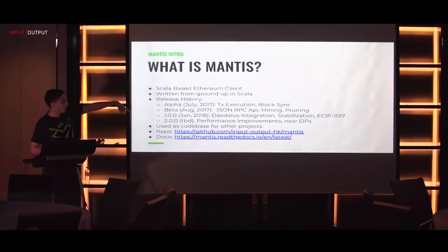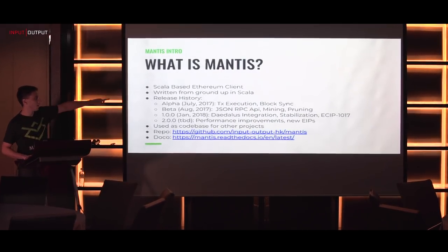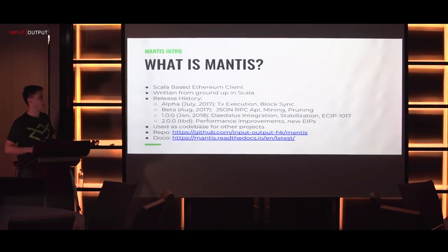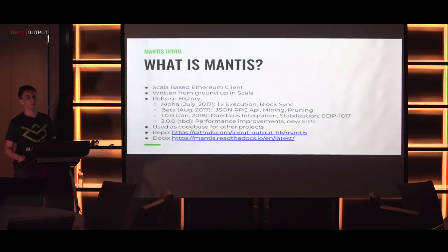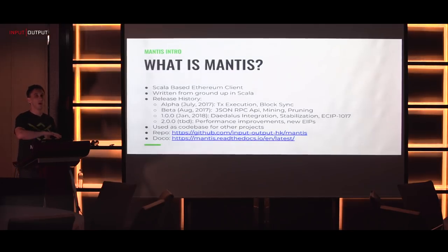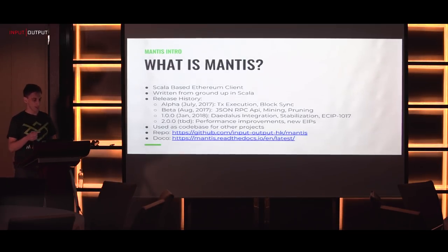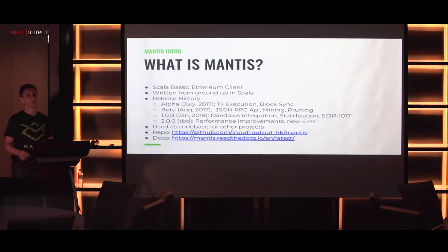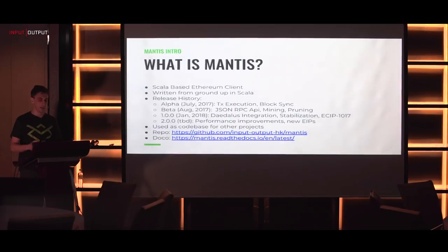Here you can see the release history. In July 2017 we released our alpha version, which includes transaction execution and block synchronization. Transaction execution is basically the EVM - we wrote it in Scala from scratch. In August we released our beta version, which included the JSON RPC API, mining, and pruning. Pruning is the mechanism that allows you to remove some state from the state trie to keep your database small. In January we released our first production version, which includes the Daedalus integration - a wallet developed by IOHK - so you can interact with Mantis using a nice UI.